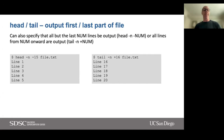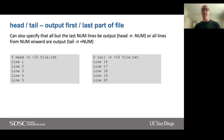One option you might not be familiar with is that we can also specify all but the last number of lines, or all lines from a certain point onward. For example, if we do `head -n -15`, we'll see all of the output except the last 15 lines. And if we do `tail -n +16`, that means we want to see all of the lines following the first 16 lines.